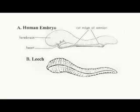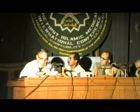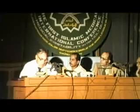The leech-like embryo is truly leech-like and is attached to the chorionic sac, which is embedded in the maternal blood and attached to the maternal endometrium, or the lining of the uterus. This is the mudga stage.